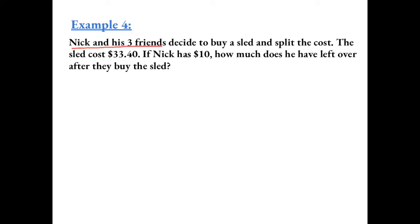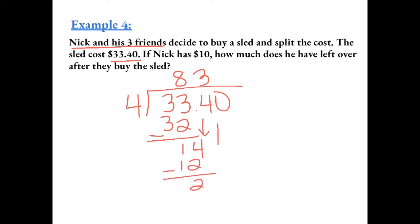Example 4: Nick and his 3 friends are splitting the cost of the sled, which costs $33.40. So first, we need to divide the cost of the sled by Nick and his 3 friends. So that's 4 people splitting the cost. So 4 goes into 33 eight times, which equals 32. Bring down the 4. 4 goes into 14 three times, which equals 12. And 4 goes into 20 five times. Bring up the decimal. So each person is $8.35.